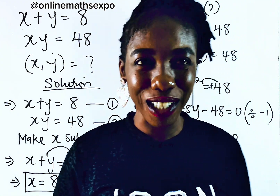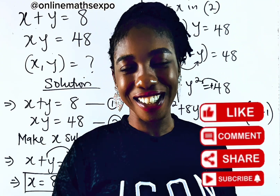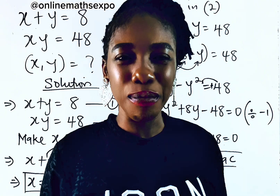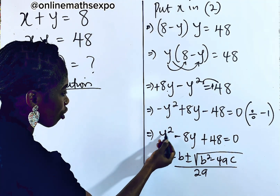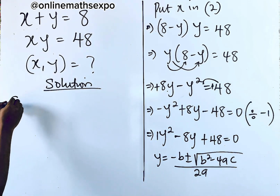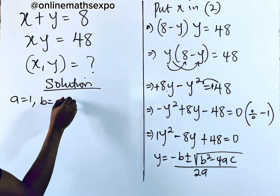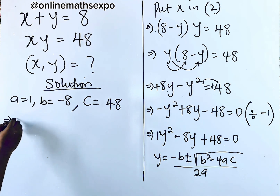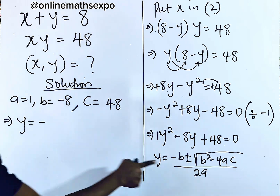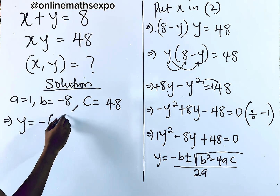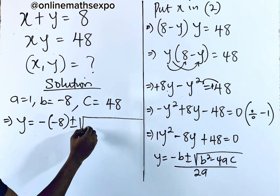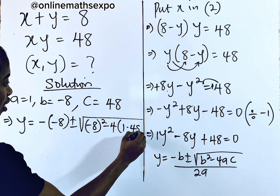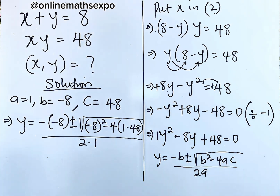So remember your formula: Y equals negative B plus or minus the square root of B squared minus 4AC, all divided by 2A. We're going to plug these values into this formula to get the values of Y. Don't forget to hit the subscribe button, give this a like, and share with your friends. The coefficient of Y squared, which is 1, is your A. Our B is the coefficient of Y, which is negative 8. Our C is the constant, which is 48. So plugging into the formula, we have Y equals negative (negative 8) plus or minus the square root of (negative 8) squared minus 4 times 1 times 48, all divided by 2 times 1.